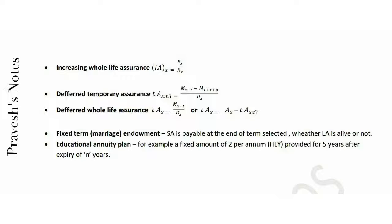Deferred temporary assurance: tA[x:n] equals M(x+t) minus M(x+t+n), divided by dx. Deferred whole life assurance: tAx equals M(x+t) divided by dx, or tAx equals Ax minus tAx:t (the t-year temporary assurance).